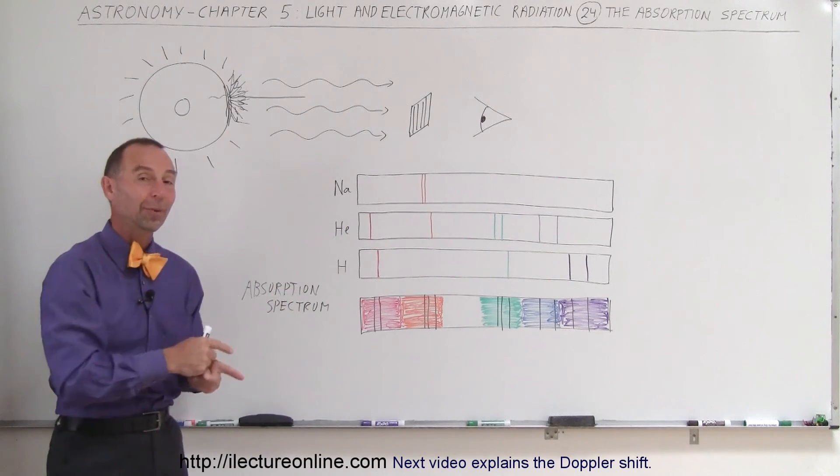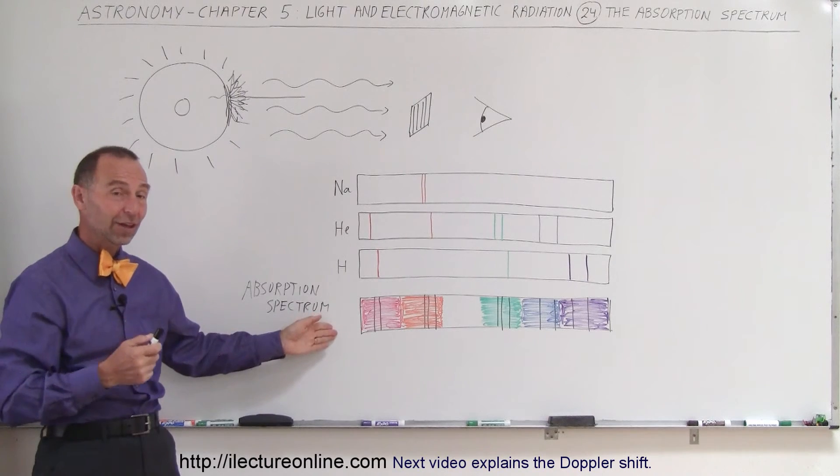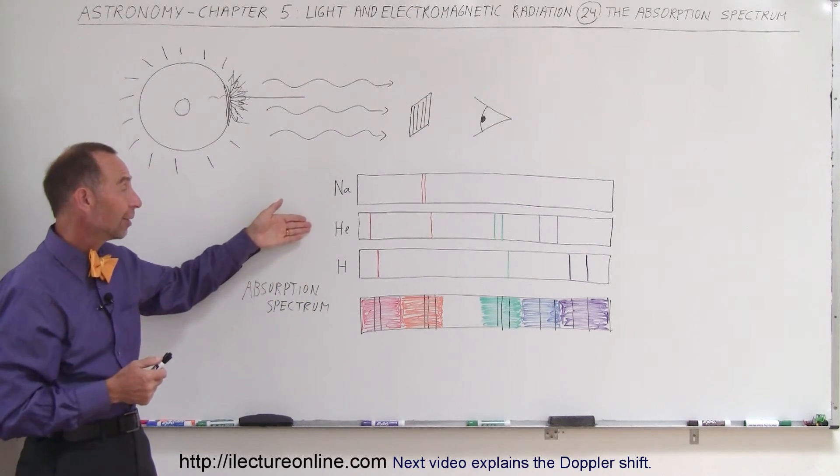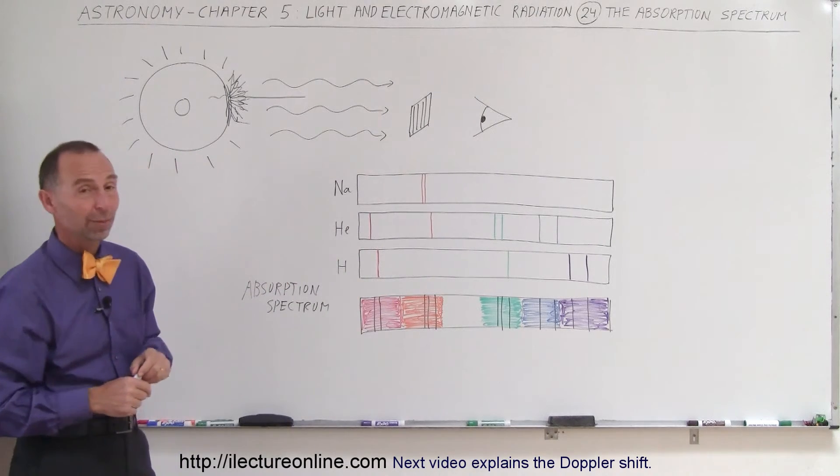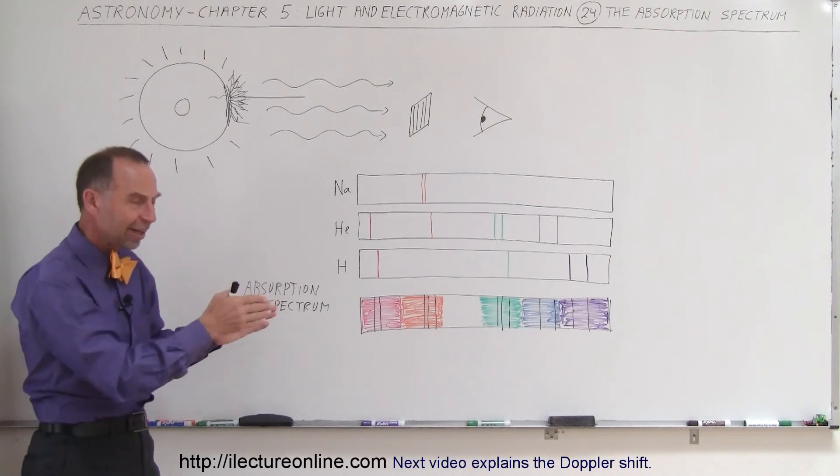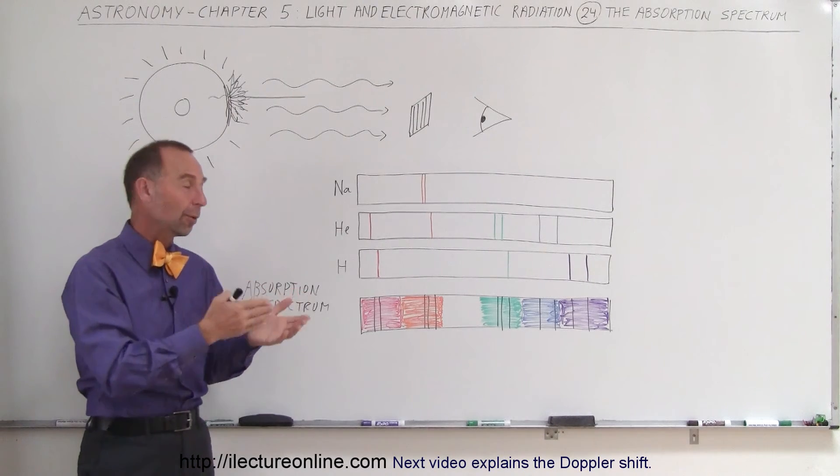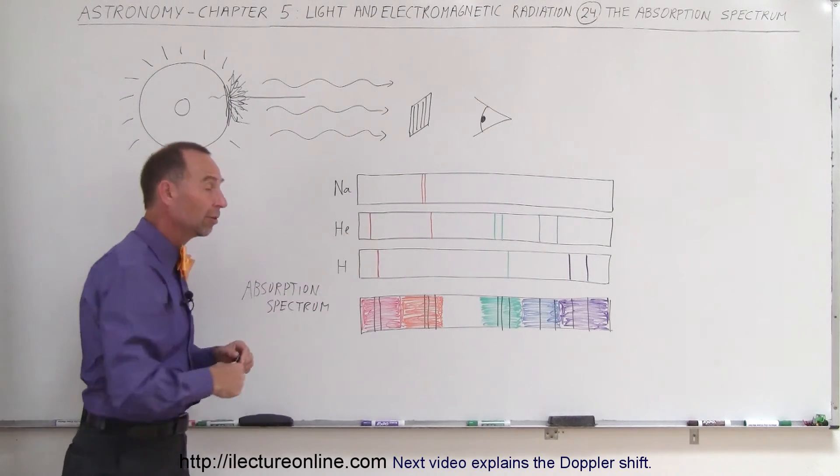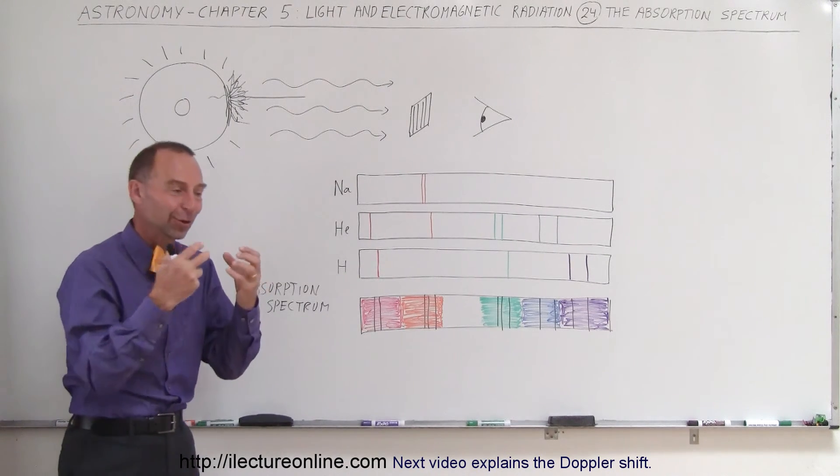It turns out that in this case, with the sun, we actually found the element helium for the first time by looking at this spectrum, the absorption spectrum of the sun. And we saw some of these lines that we couldn't identify. We had no experiment that we had done on the earth where we had recognized the actual emission spectrum because helium is a rather difficult gas to sequester.